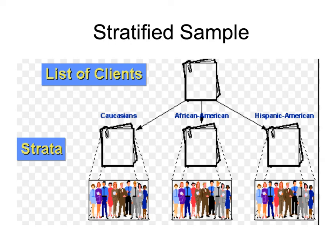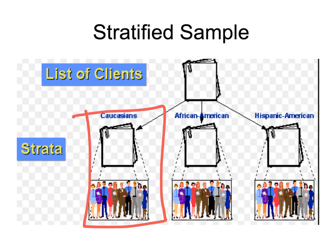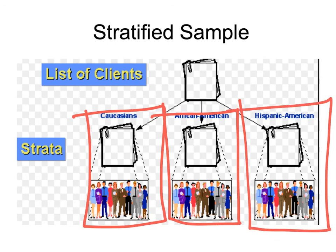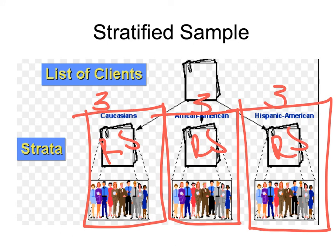In stratified random sampling, to make sure everyone is accounted for, you break the population into subgroups. For example: Caucasians in one group, African-Americans in another, Hispanic-Americans in another. Then within each group you randomly sample — say three from each group — to make sure the entire demographic is represented. Stratified sampling is a method of random sampling where you ensure every subgroup is represented, unlike simple random sampling which doesn't target specific groups.